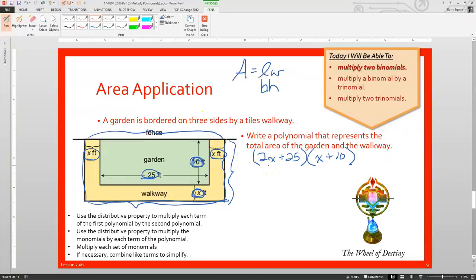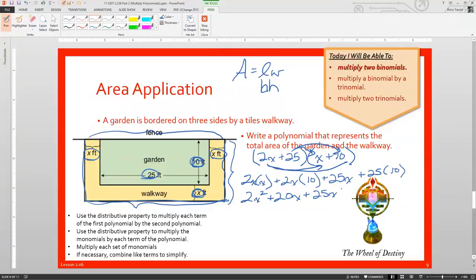I'm just going to start drawing arrows instead of writing out all those steps. So, 2x times x, and then 2x times 10, oops, 2x times 10, then plus 25x, plus 25 times 10. So, now let's multiply these out. And we get 2 times x times x, that's 2x squared, plus 2x times 10, that's 20x, plus 25x, plus 250.